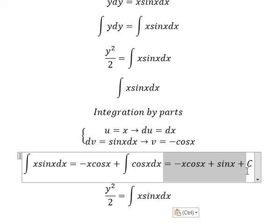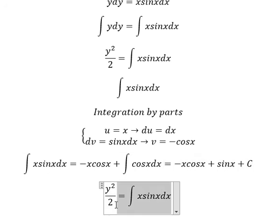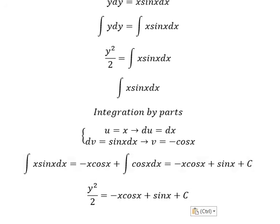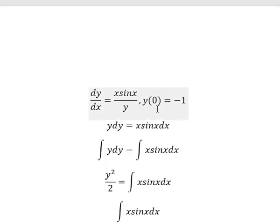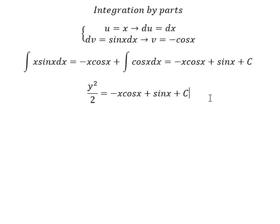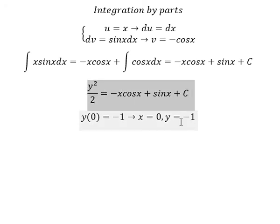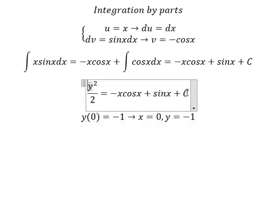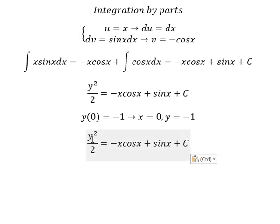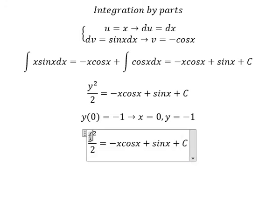We put this result back in here. Next, we have the initial conditions — that means when s equals zero, y equals negative one. So we substitute s and y into the equation to find the constant. We have negative one on the left side.